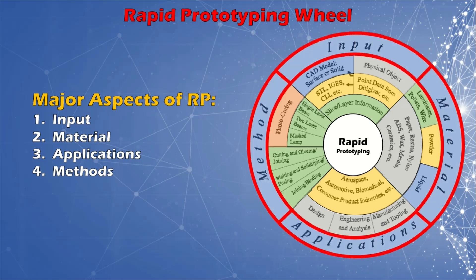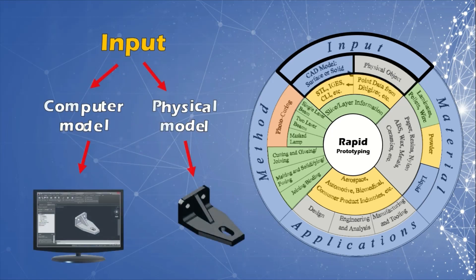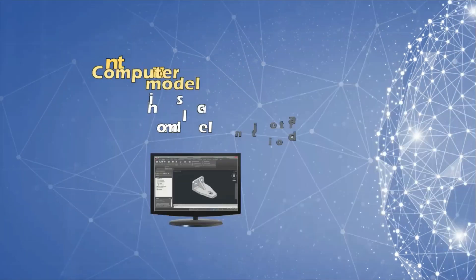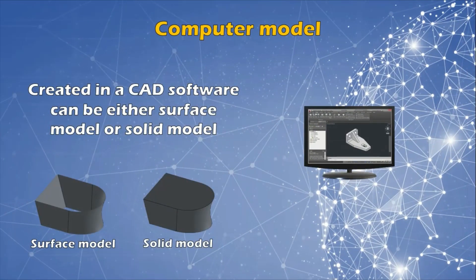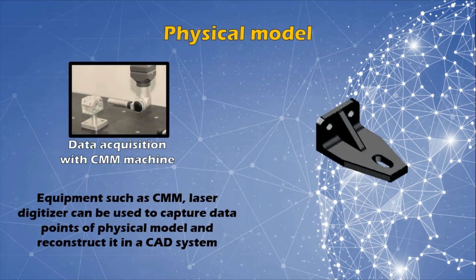Input refers to the electronic information required to describe the physical object with 3D data. There are two possible starting points: a computer model or a physical model. The computer model created by a CAD system can be either a surface model or a solid model. On the other hand, 3D data from the physical model is not at all straightforward.